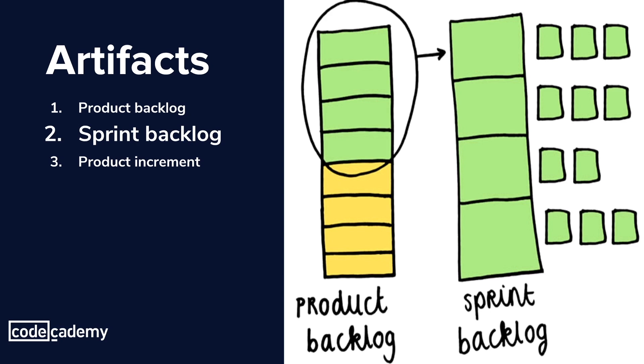The sprint backlog is a list of tasks that the development team has agreed to tackle. These tasks are taken from the product backlog and will take the product closer to the team's sprint goal.